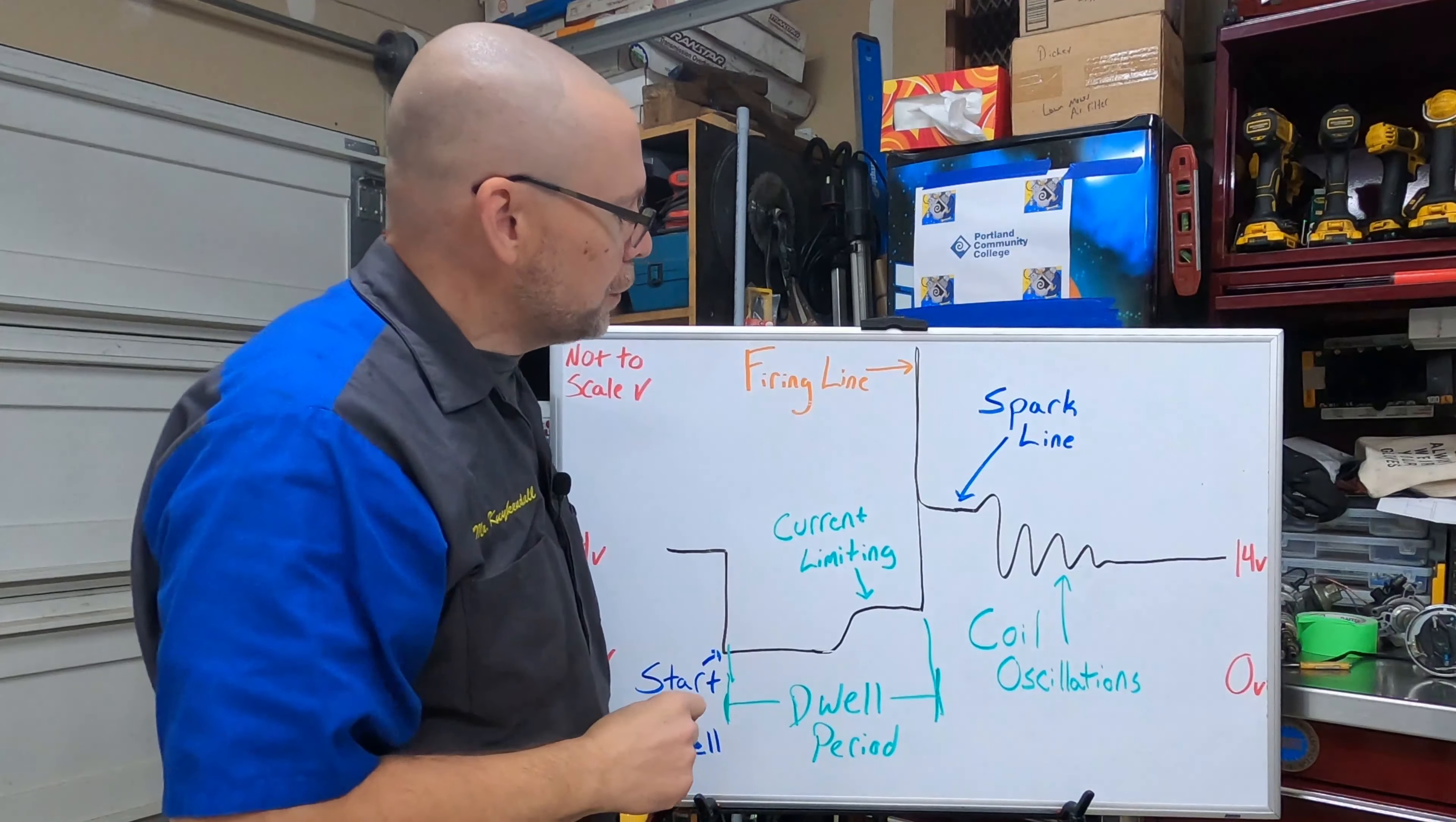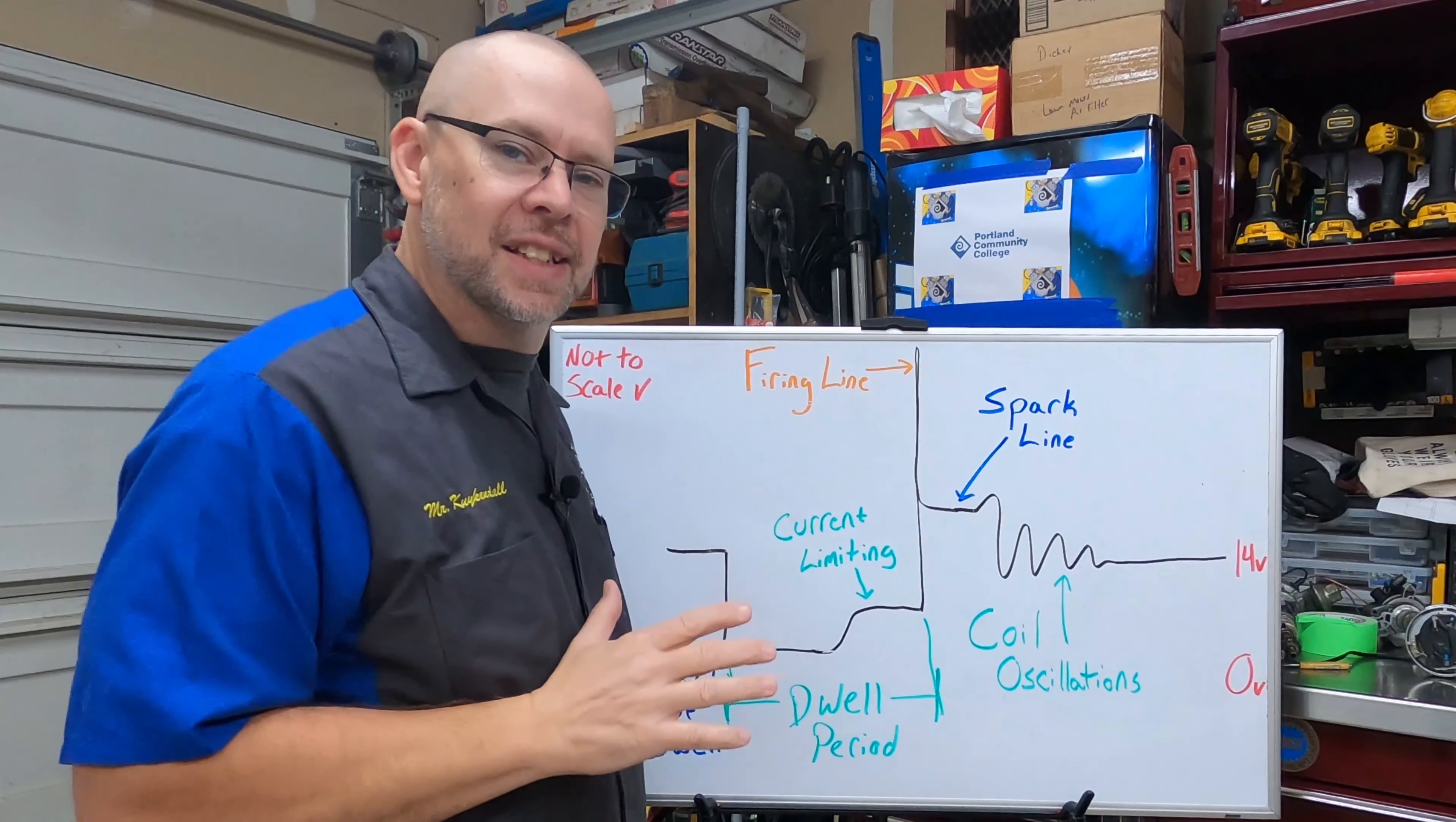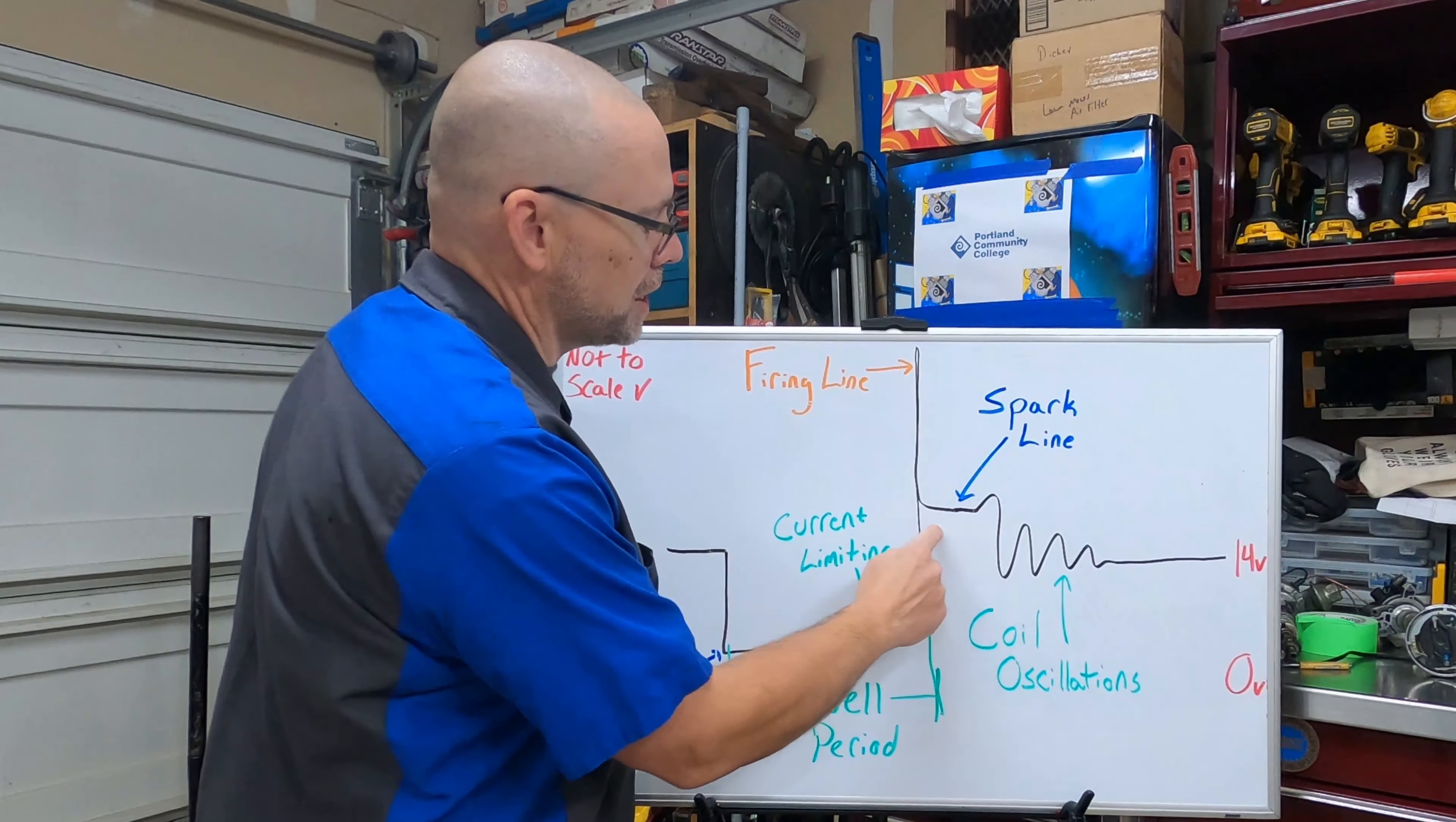Next up we have the spark line. This is where the spark is actually ionized across the spark plug gap or jumping the plug gap. Our spec tells you this should be from eight tenths to two milliseconds, eight tenths of a millisecond to two milliseconds, very short period of time. Realistically if you're running eight to nine tenths of a millisecond in a spark line everything needs to be perfect inside the cylinder.